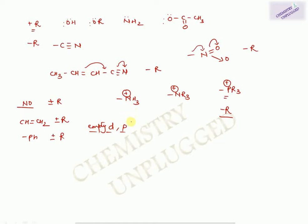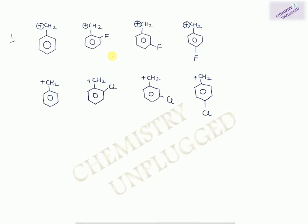Now let's take the first question — compare stability of four carbocations. The first step is to write down what type of effects are present. A simple benzene carbocation shows simple resonance effect. Fluorine and other halogens can show plus R effect because they have three lone pairs of electrons to donate. Halogens also show minus I effect. Minus I effect operates at meta position as well, but resonance effect is only at ortho and para positions, similar to hyperconjugation.